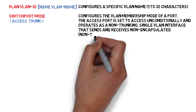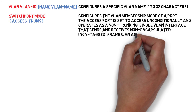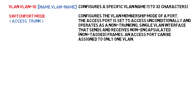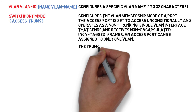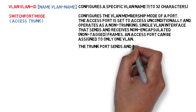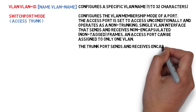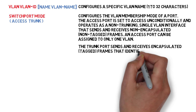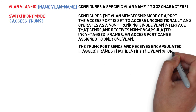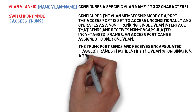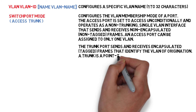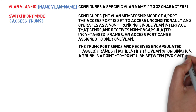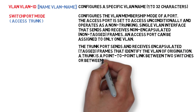Switchport mode access/trunk — configures the VLAN membership mode of the port. The access port is set to access unconditionally and operates as a non-trunking single VLAN interface that sends and receives non-encapsulated, non-tagged frames; it can be assigned to only one VLAN. The trunk port sends and receives encapsulated tagged frames that identify the VLAN of origination. A trunk is a point-to-point link between two switches or between a switch and a router.